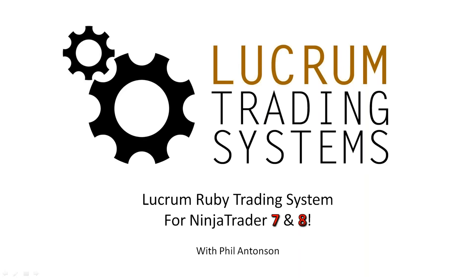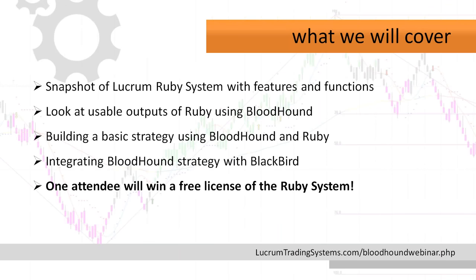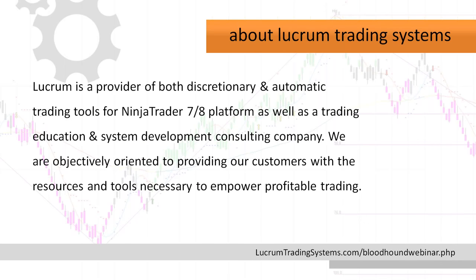Hello everybody, thank you very much for joining me here today. My name is Phil Antonsen with Lucrum Trading Systems, and a special thank you to Ty and Shark Indicators for hosting this presentation. Here's a quick overview of what we will cover today: first, a snapshot of the Lucrum Ruby trading system and its key features; then usable outputs of Ruby using Shark Indicators' Bloodhound software; then we'll build a basic strategy using both Bloodhound and Ruby; integrate it into a Bloodhound-driven logic engine, power it with Blackbird for backtesting; and at the end, I'll do a random raffle drawing for a free lifetime license of the Ruby system.